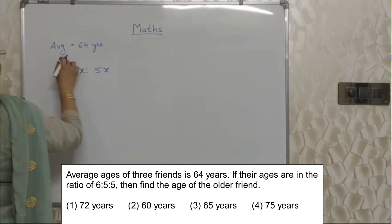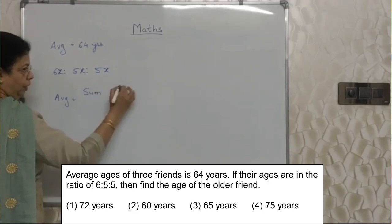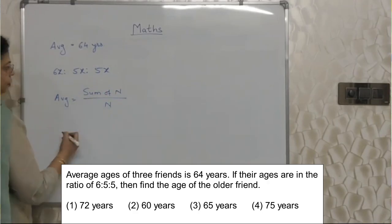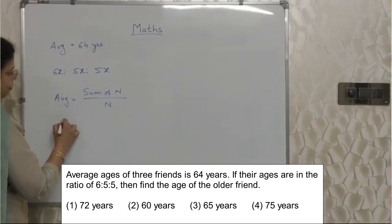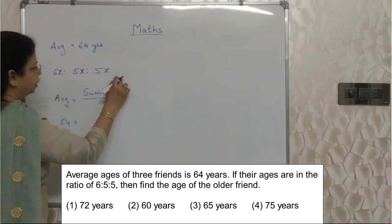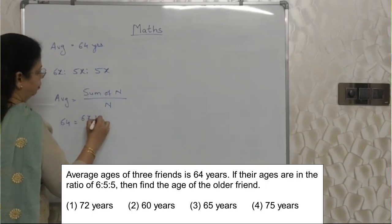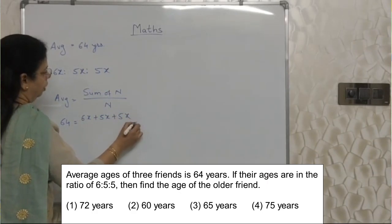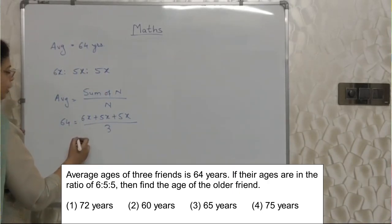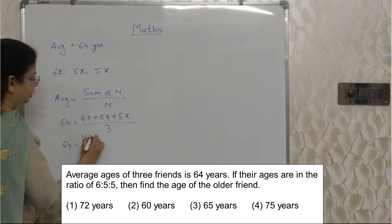Now they have given the average. The formula of average is: average equals sum of all items divided by n. In this case, average is 64. The sum of ages is 6x plus 5x plus 5x. There are 3 people, so n is 3. So 64 equals 16x upon 3.